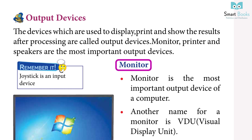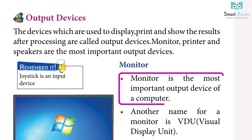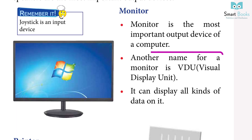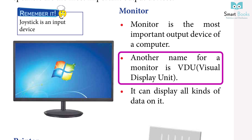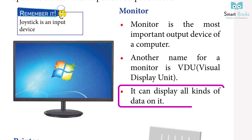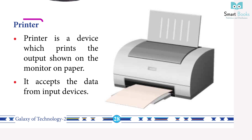Monitor: the monitor is the most important output device of a computer. Another name for a monitor is VDU — Visual Display Unit. It can display all kinds of data on it.